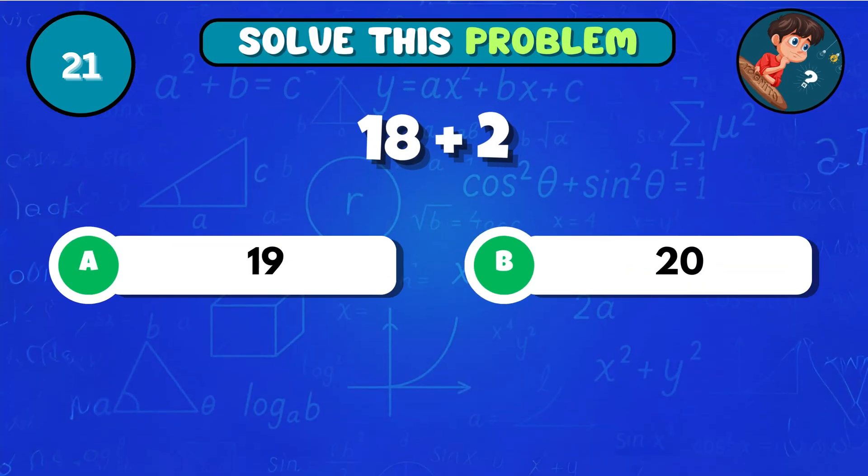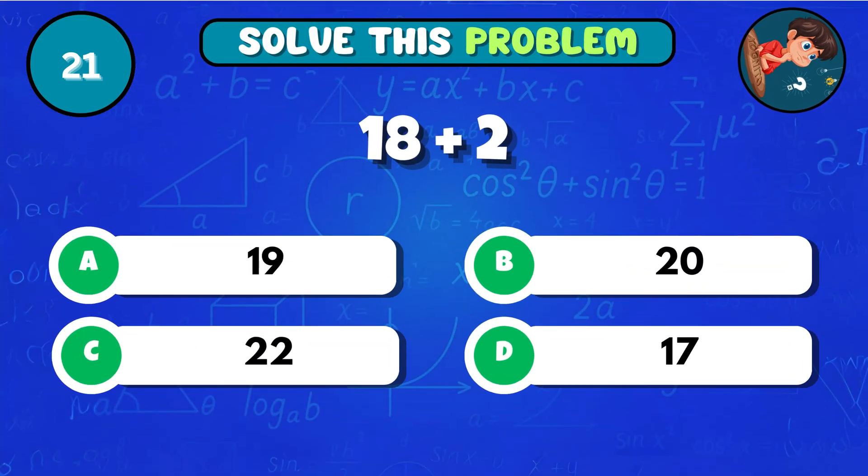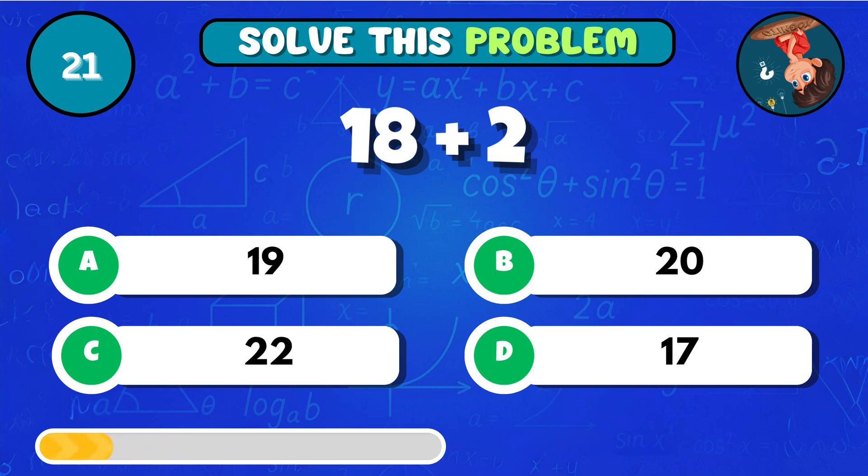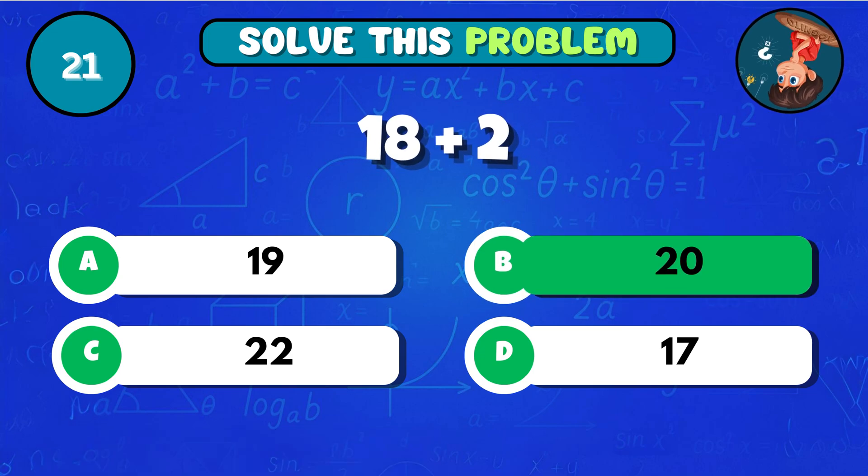What happens when you add 18 and 2? The result is B 20!